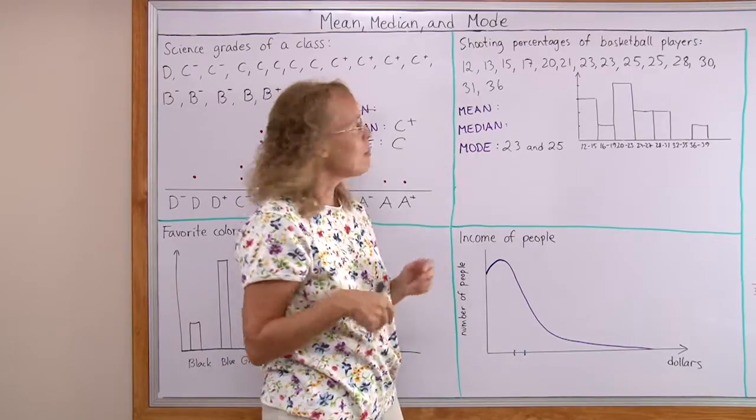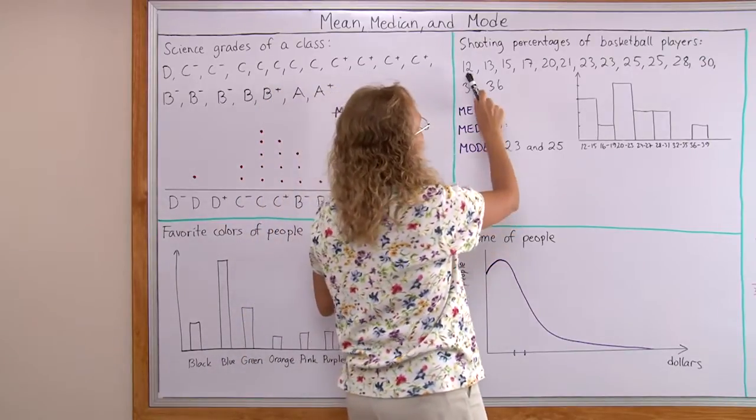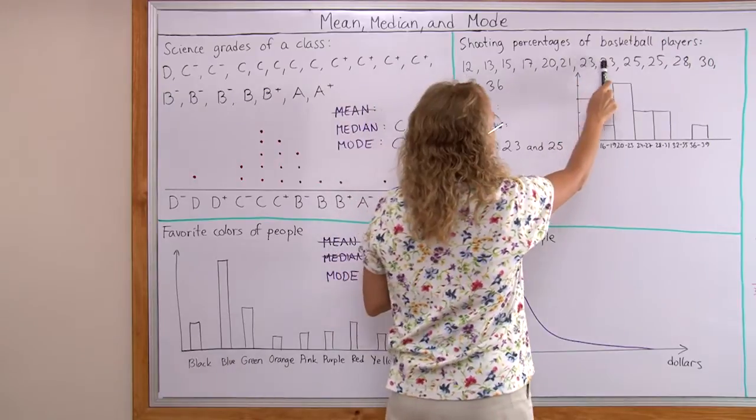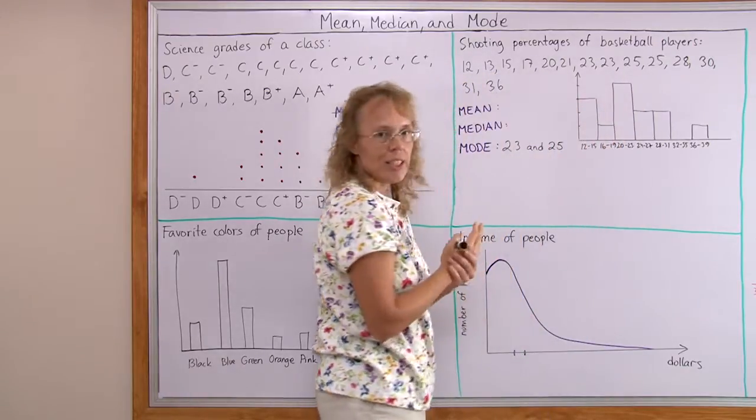Median is the middlemost number. Let's check that now. There's 1, 2, 3, 4, 5, 6, 7, 14 players. And so the middlemost number is now not going to be a single number, because when I divide this data set in half, I get 7 and 7.